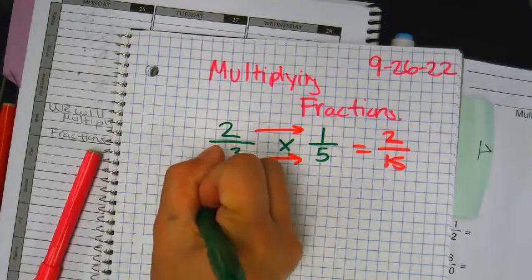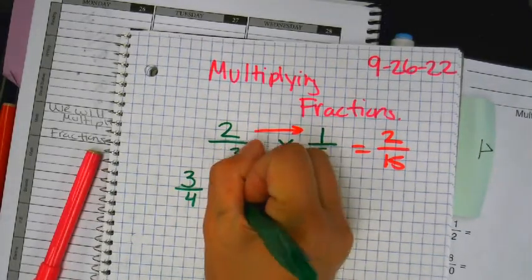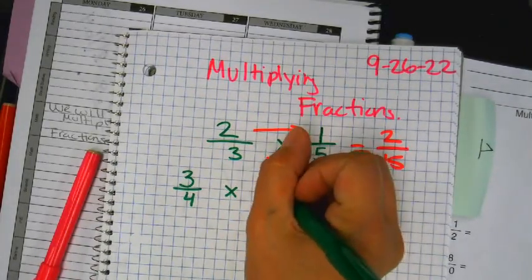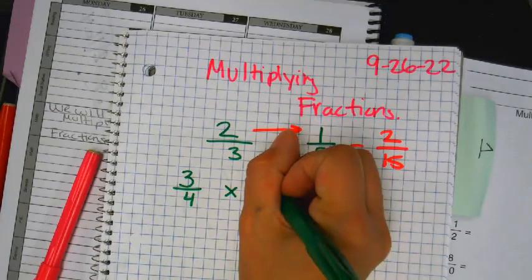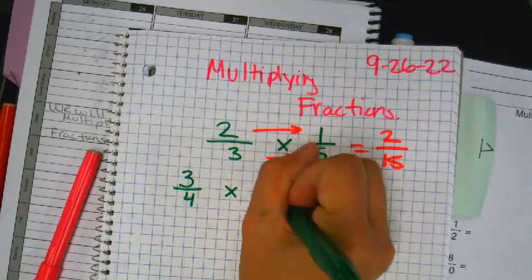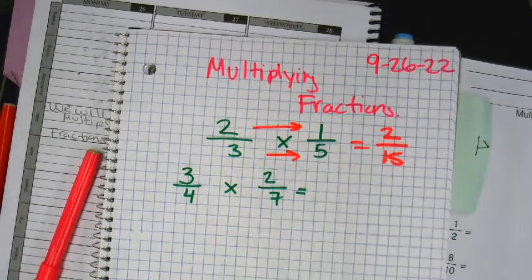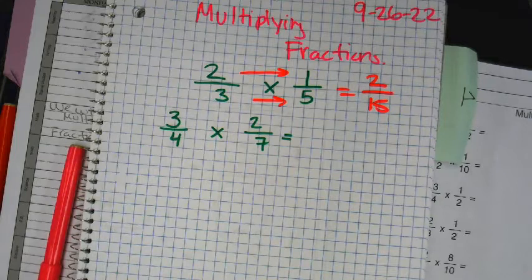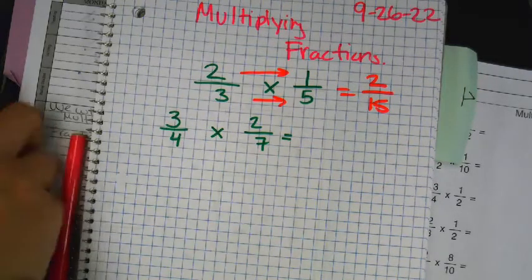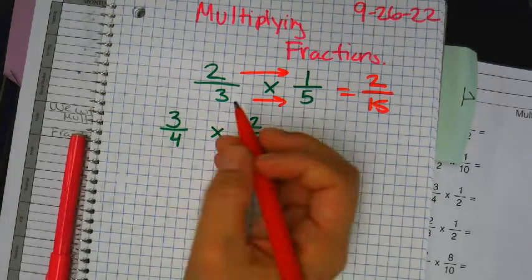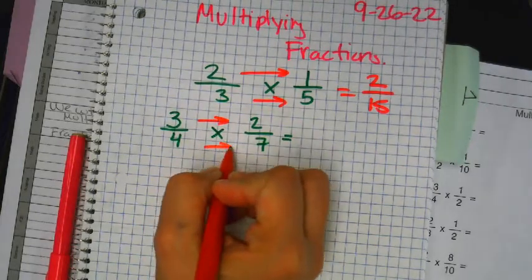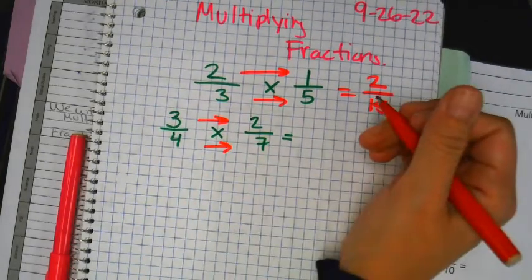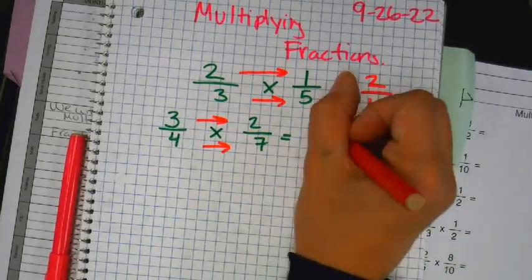3 fourths times 2 sevenths. So there is no common denominator, you just multiply straight across. 6 over 28.